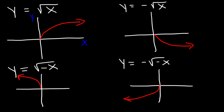If you ever forget these things, here's a helpful trick. The sign in front of x I associate with x, and the sign outside of the radical I associate with y. When x is positive, you travel towards the right. When y is positive, you go up — which leads you towards quadrant 1.